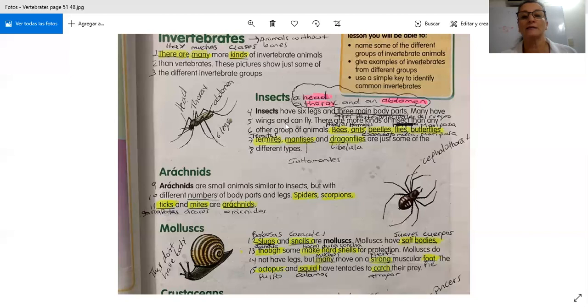Muchos tienen alas y pueden volar. Hay más clases de insectos que cualquier otro grupo de animales. Amores, abejas, hormigas, escarabajos, moscas, mariposas, termitas, saltamontes, y libélulas. Amores, los mantises son muy parecidos a la libélula, pero más chiquitos.